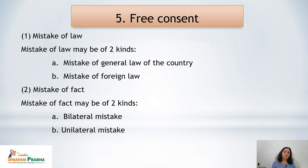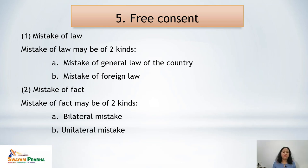For example, Mr. A was selling his watch to Mr. B for rupees 2000, but Mr. B thought it was rupees 200. This is a unilateral mistake — only B is mistaken, not A. When both parties are mistaken, it is a bilateral mistake. When the mistake is on the part of a single party, as in this example, it is a unilateral mistake.